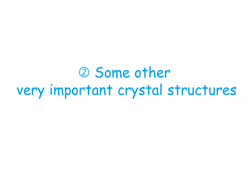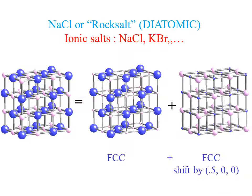Let's continue our review of important crystalline structures. The first is sodium chloride, or rock salt — a diatomic cubic crystal. You can describe it as the superposition of two FCC structures, one for atom type A and one for atom type B, where the two FCC lattices are shifted by one-half a1, zero a2, zero a3. This structure is found in important ionic crystals like sodium chloride, bromine, KBr, and others.